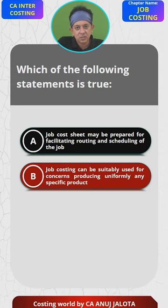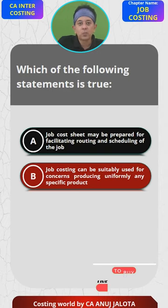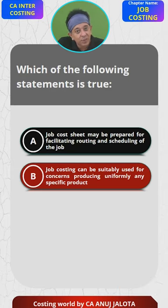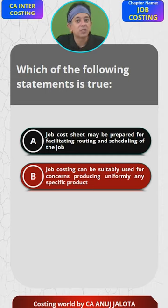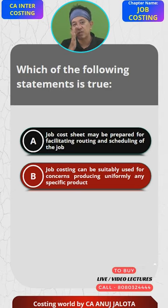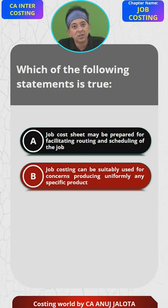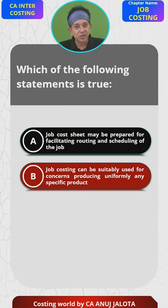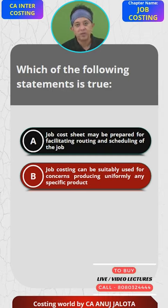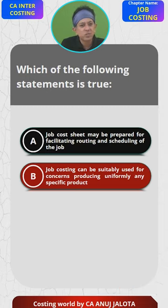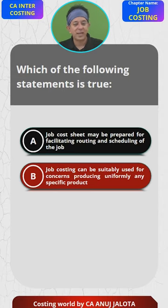Option B: Job costing can be suitably used for concerns producing a uniform specific product. This is completely false. Job costing is for companies which manufacture every different unit — each and every job is unique, that is the essence of job costing. If a company manufactures only standardized products, like only calculators, job costing is not relevant at all. Job costing is only relevant for companies where each and every unit is different.